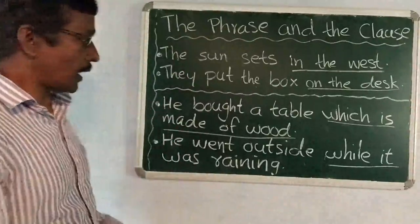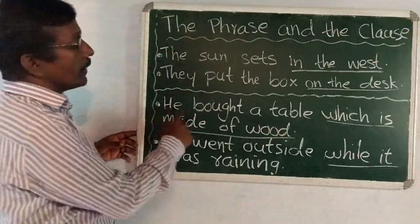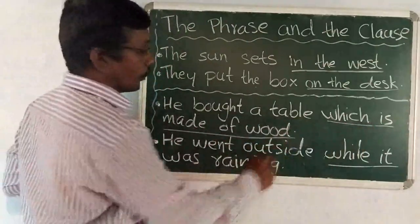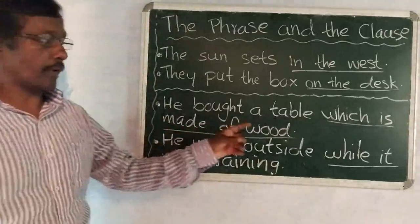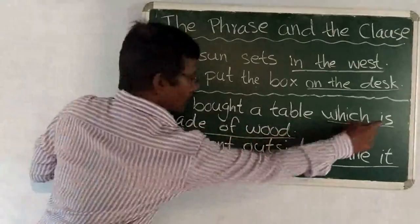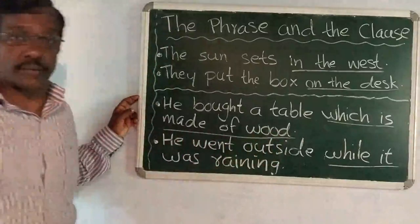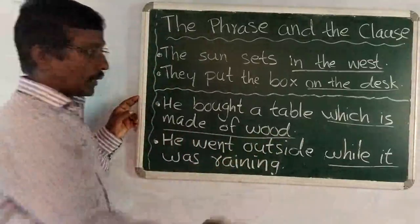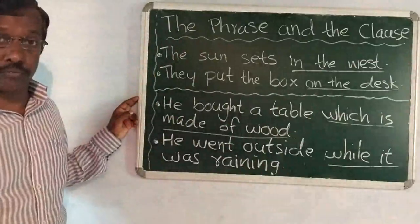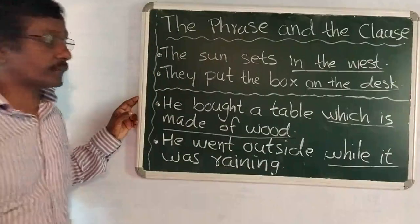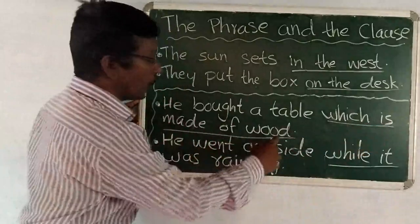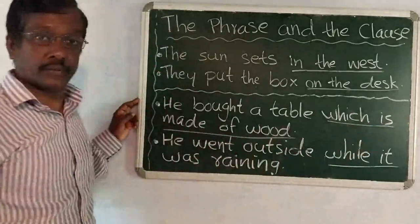Now look at another sentence: 'He bought a table which is made of wood.' In this sentence, 'which is made of wood' is a clause. A clause is just like a phrase — a group of words — but it gives us complete sense. 'Which is made of wood' gives us complete sense.